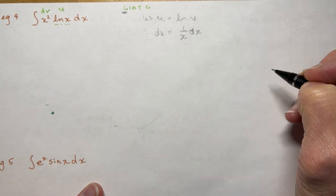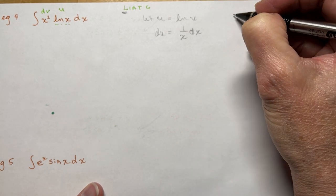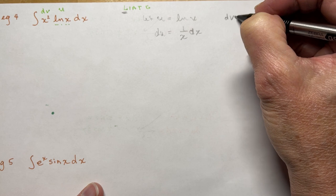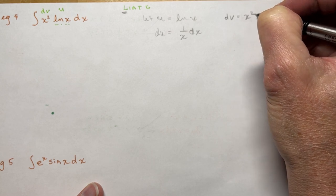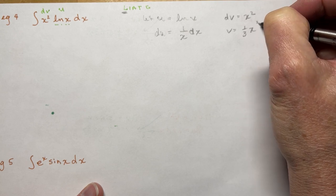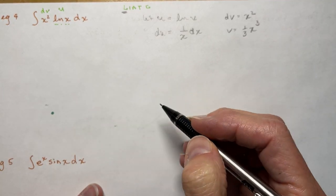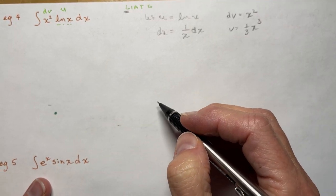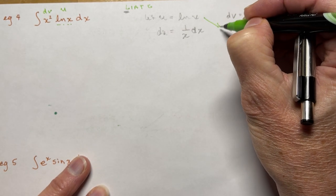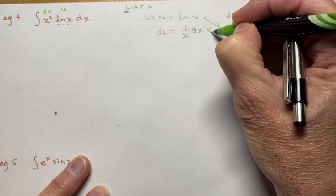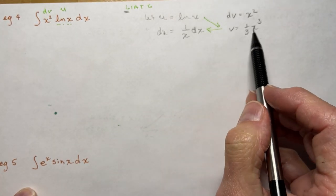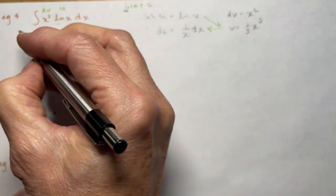And we're going to say dv is going to be x². So v is going to be (1/3)x³. So now again we're going to do the arrow method. So I have (1/3)x³·ln(x).